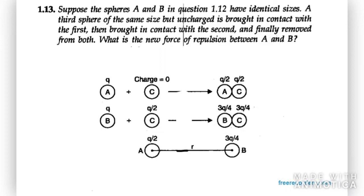Let's start with question number 13. It says: suppose the spheres A and B have identical sizes. A third sphere of the same size but uncharged is brought in contact with the first, then brought in contact with the second, as shown in the diagram, and finally removed from both. What is the new force of repulsion between A and B?